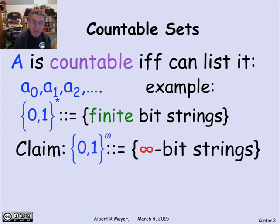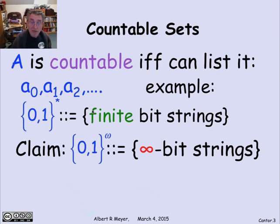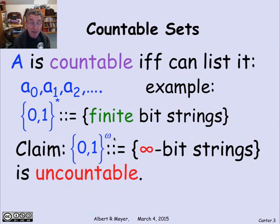We claimed last time, and now we're about to prove, that if you look at the infinite bit strings — the one-way infinite ones, which have a beginning and go on infinitely to the right — with notation {0,1}^ω, where omega indicates a kind of infinity, this is going to be an example of an uncountable set.